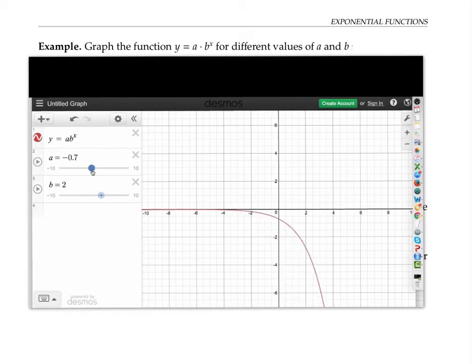Let's go back to an a value of one and see what happens when we change b. Right now, the b value, the base, is two. If I increase b, my y-intercept sticks at one, but my graph becomes steeper and steeper.